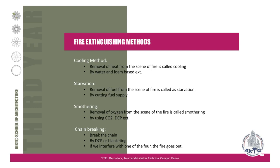In the cooling method, we remove heat from the fire using water and foam-based extinguishers. Starvation involves the removal of fuel from the scene — cutting the fuel supply. Smothering means removing oxygen, such as by using CO2 or dry chemical powder extinguishers. Chain breaking means interfering with the chain reaction by blanketing the fire, so that one of the four elements is disrupted and the fire goes out.